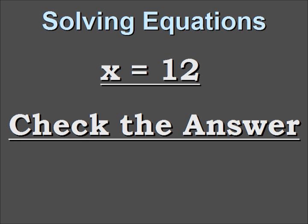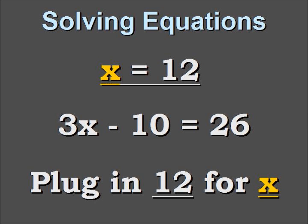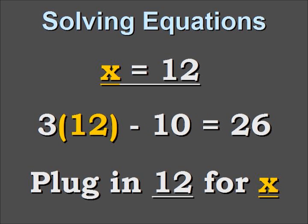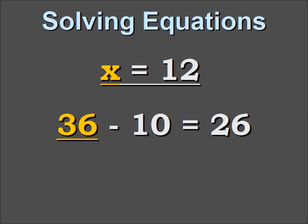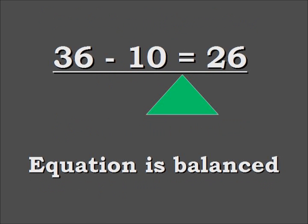Now we check our answer by taking our solution and putting it back into the original equation. We plug 12 in for x, so 3 times 12 gives us 36 minus 10 equals 26. That's a true statement, so the answer must be correct because the equation is still balanced.